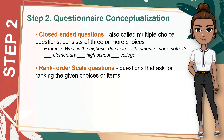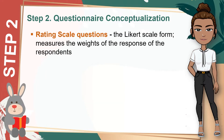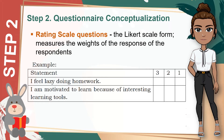Next, rank order scale questions are questions that ask for ranking the given choices or items. Example: rank the following based on their importance in work as a senior high school student — three for the highest and one for the lowest: doing homeroom activities, going to the library, and using a computer. Next is the rating scale questions. It is the Likert scale form, and it measures the weights of the responses of the respondents. For example: the following statements will be rated as one, two, or three — 'I feel lazy doing homework' and 'I am motivated to learn because of interesting learning tools.'